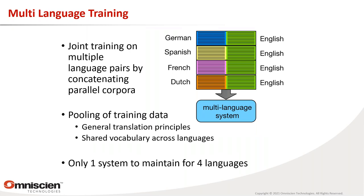One approach is to jointly train a model on all languages simultaneously — a multilingual system that can translate German, Spanish, French, and Dutch into English from one model, pooling all training data. The hope is the model learns general translation principles and shared vocabulary like the word 'computer' across many languages. Low-resource languages benefit from data available in high-resource languages. From a deployment perspective, one system to maintain instead of four is also more efficient.